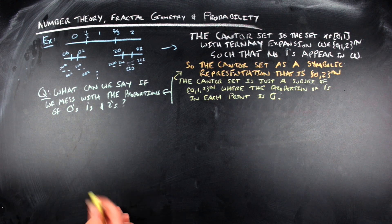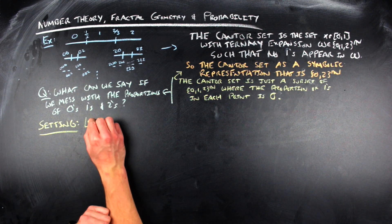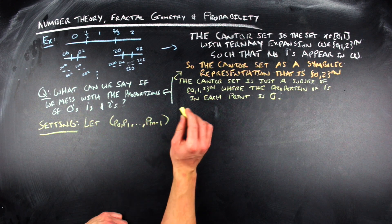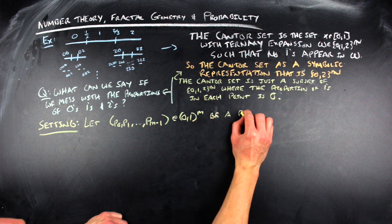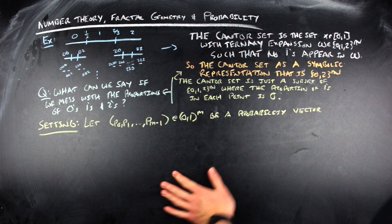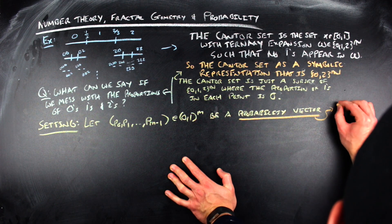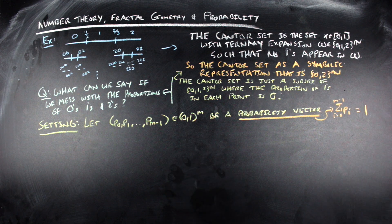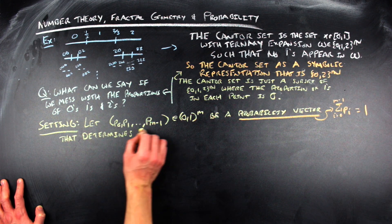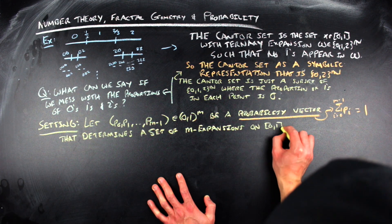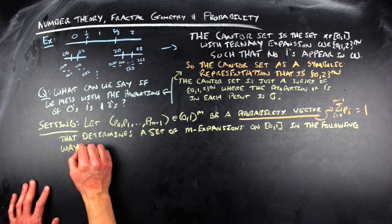So the setting that we're going to work in for the context of this video is as follows. Let p sub 0, p sub 1, all the way up to p sub m minus 1 be an m-dimensional probability vector with entries in the open unit interval. And we're going to say that that probability vector will determine a set of m expansions on the closed interval from 0 to 1 in the following way.